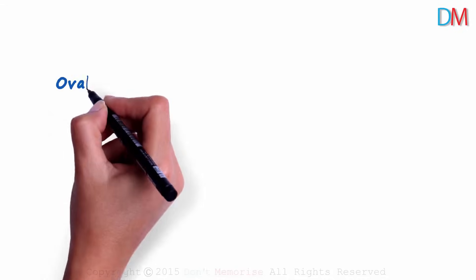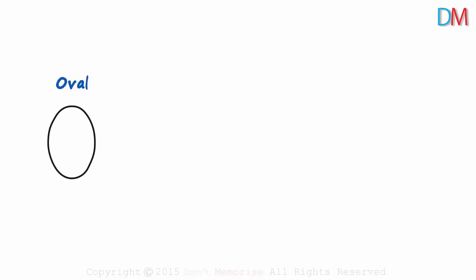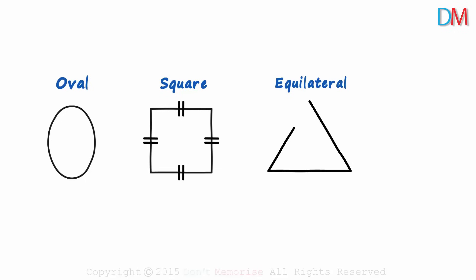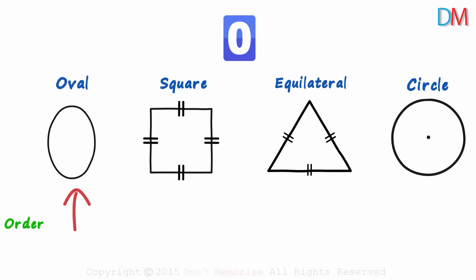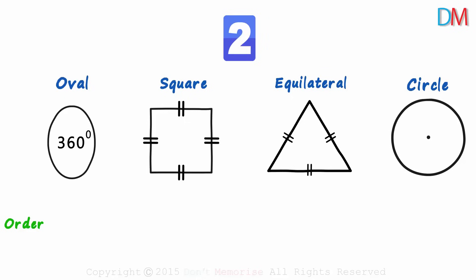Let me give you a few shapes — why don't you try finding their order of rotational symmetry? First, an oval looks like this. Next, a square, an equilateral triangle, and a circle. Each of them has rotational symmetry but we need to find the order. We begin with the oval shape and start rotating it. We see it looks like the original once and twice — so its order of rotational symmetry is 2.